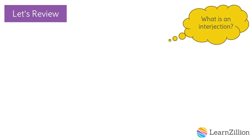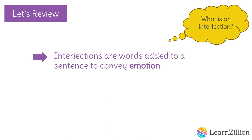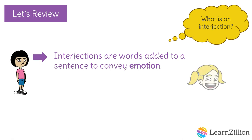Let's review. What is an interjection? An interjection is a word added to a sentence to convey an emotion, such as surprise, disgust, joy, or excitement. Interjections often appear at the beginning of a sentence and they are not grammatically related to the rest of the words. In other words, you could get rid of the interjection and a sentence would read just fine without it.